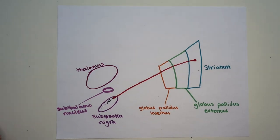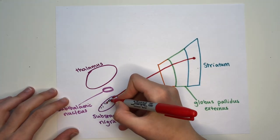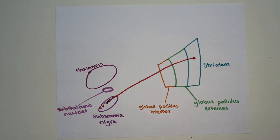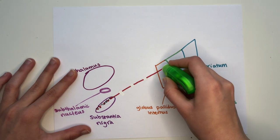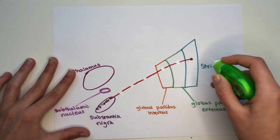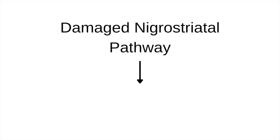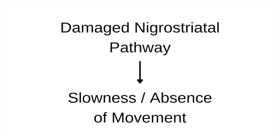Now, with all of that out of the way, let's see what's damaged in Parkinson's disease. It's the critical dopaminergic neurons in the SNPC that we've been talking about. When the nigrostriatal pathway is no longer functioning properly, the balance between the direct and indirect pathways is tipped towards the indirect pathway, which inhibits movement, leading to many of the characteristic signs and symptoms of Parkinson's, such as slowness or absence of movement. Now that we understand the mechanism behind Parkinson's, we can finally look at treatments for it.